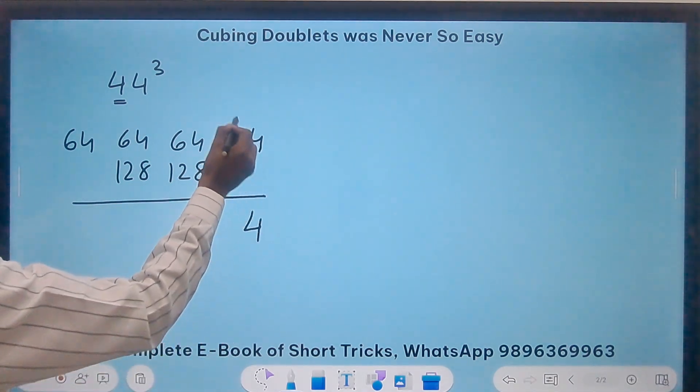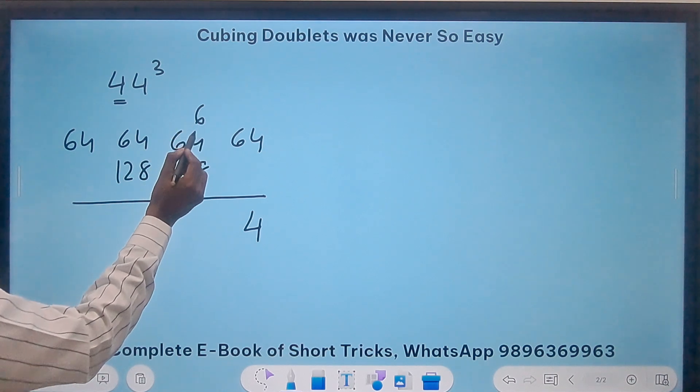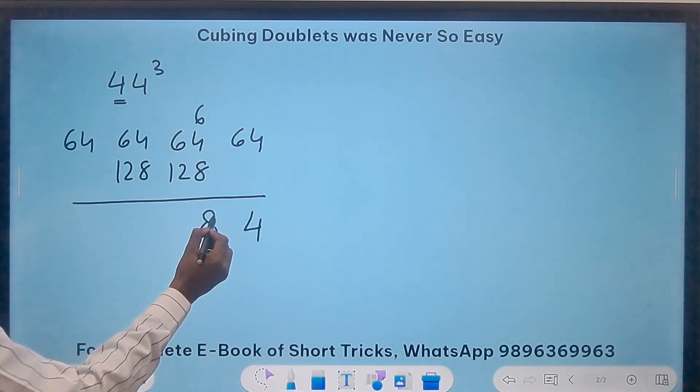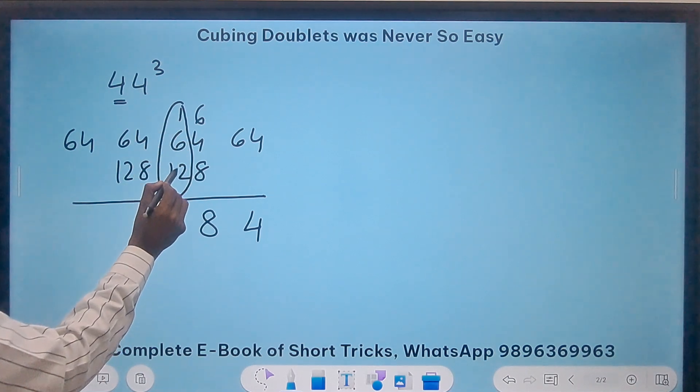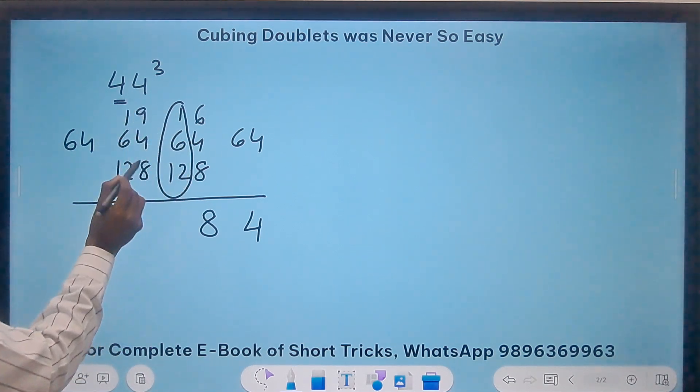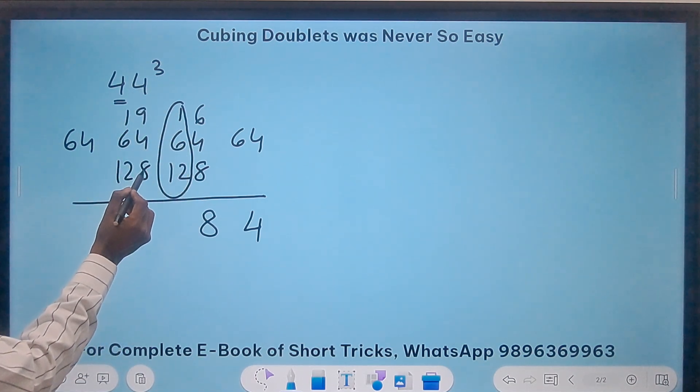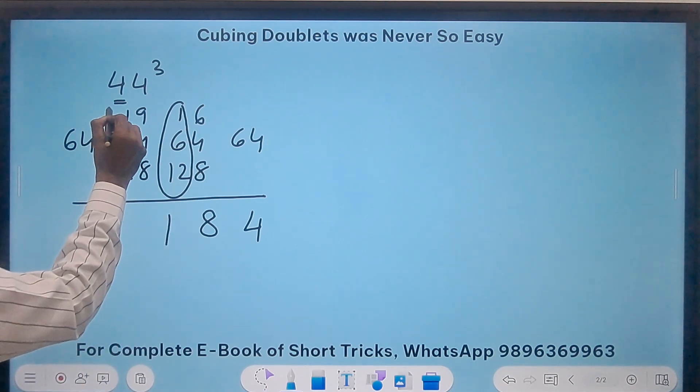Put a horizontal line. Bring down the 4, carry forward the 6. So 6 plus 4, 10 plus 8, 18. 8, 1 carry. And this part is 12 plus 6, 18 plus 1, 19.